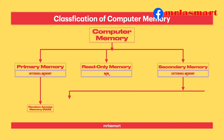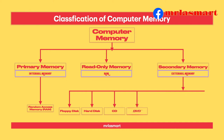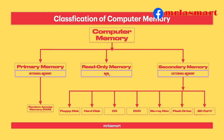Various types of secondary memory are: Floppy disk, Hard disk, CD, DVD, Blu-ray disk, Flash drive, and SD card.